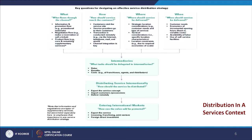How should service reach the customers? Customers visit the service site. Service provider goes to their customers. Transaction is conducted remotely — that is via the internet, telephone, mail, or email. And channel integration is the key for this 'how.' Where should service be delivered? Strategic location considerations include, for example, customer needs and the type of service. Tactical considerations include specific location characteristics and location constraints, for example, due to required economies of scale.